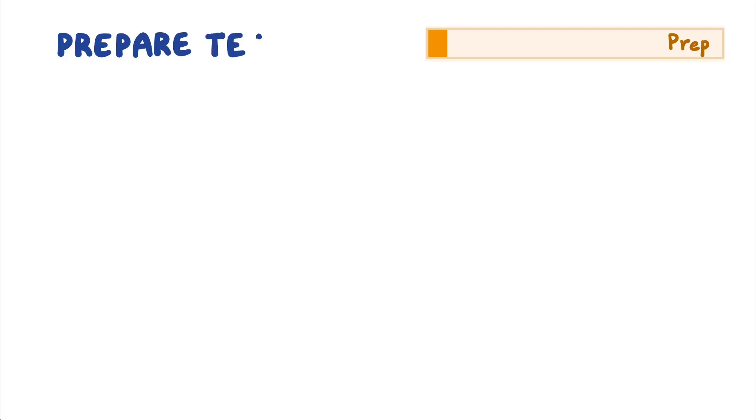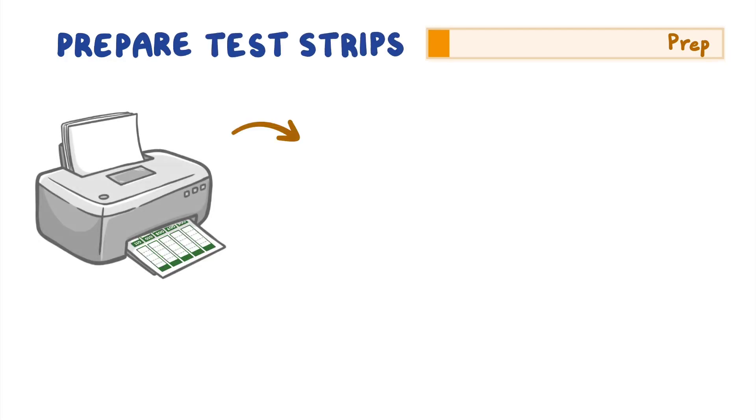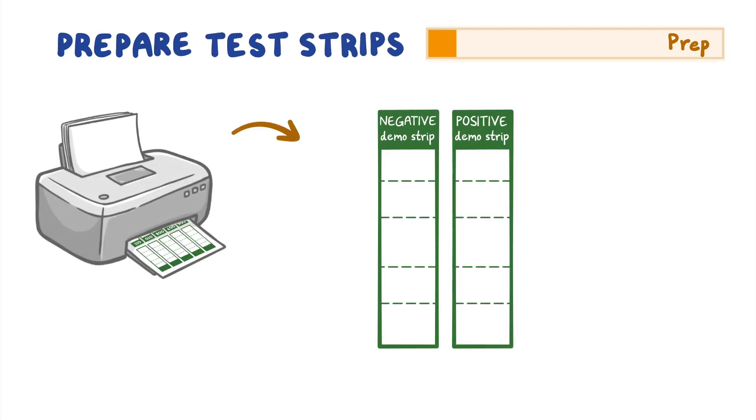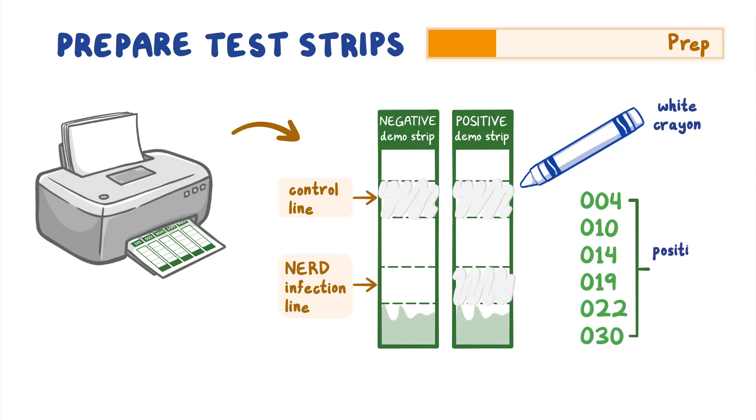To prepare the class set of antigen test strips, first print them out on office or copy paper. Color the control line on each strip with white wax or white crayon. The dye-colored water will not absorb into this part of the test strip and indicates the test is working. Next, color the NERD infection line on strips that are positive.